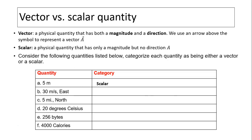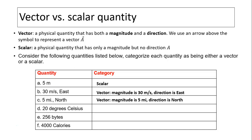Its magnitude — meaning how big the vector is — is 30 meters per second, and its direction is east. For example, (c) is another vector quantity: its magnitude is 5 miles and the direction is north. The remaining quantities (d, e, f) have no directions, so they are all scalar quantities.